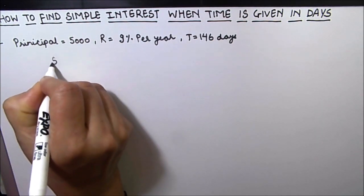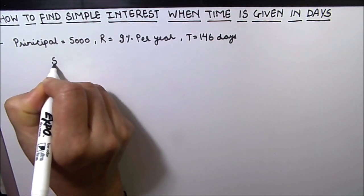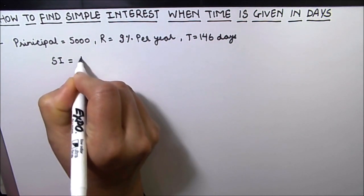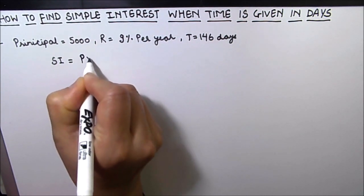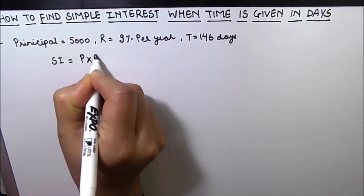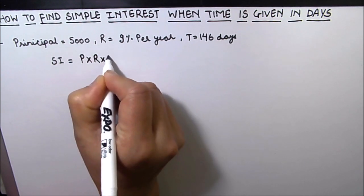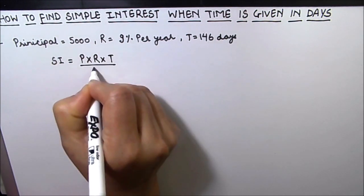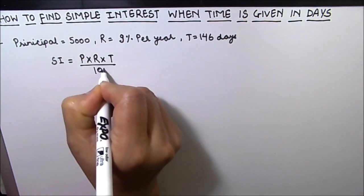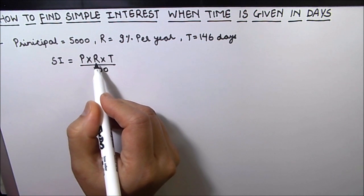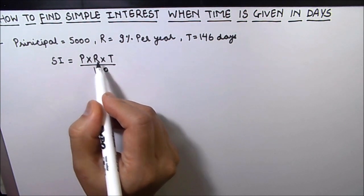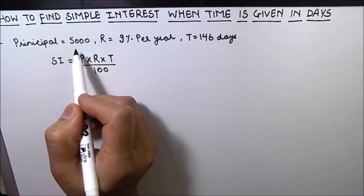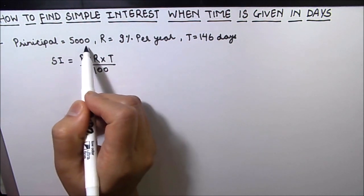We all know that the formula for simple interest is: Simple Interest = Principal × Rate of Interest × Time divided by 100. Here, the rate of interest is per year and time is also in years.